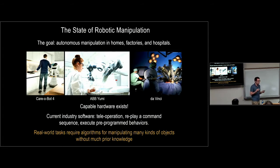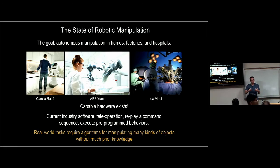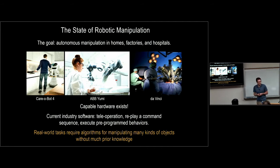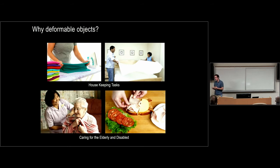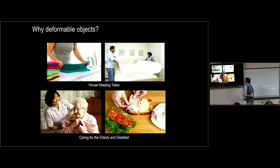We need algorithms that allow robots to manipulate objects they don't have much information about — objects they may never have seen before. These objects may be rigid, deformable, or even things like jello or fluids. So why do we focus on deformable objects? If you want a robot that helps in your house but it can't cook, clean, do laundry, make your bed, or help elderly or disabled people get dressed, it's not going to be a very useful robot.